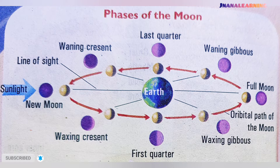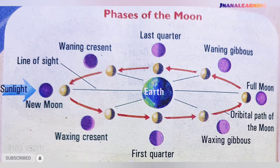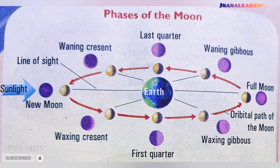When the position of the moon comes in between the earth and the sun, the side facing the earth will be dark, and it is called a new moon.